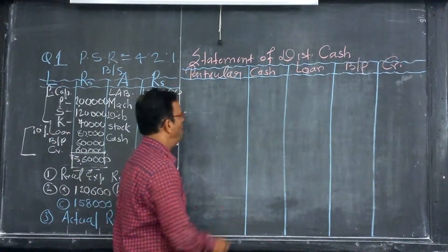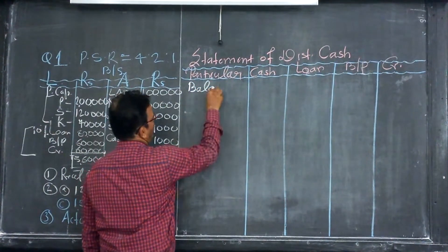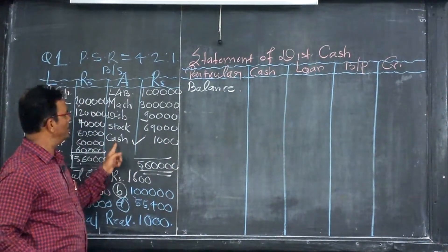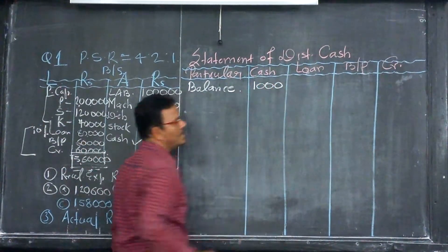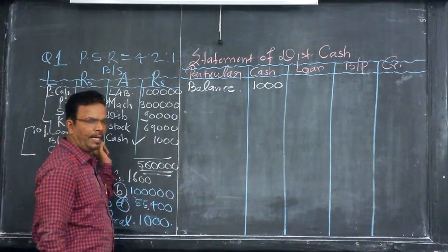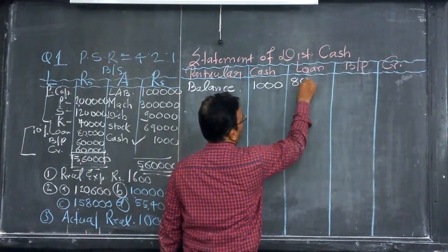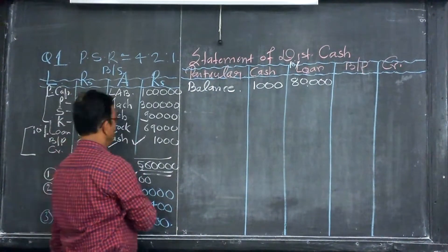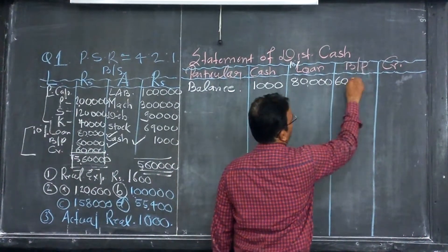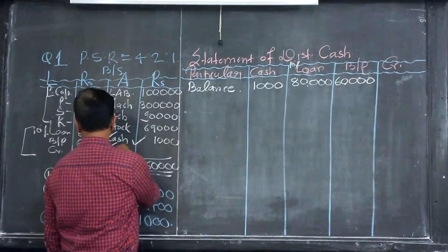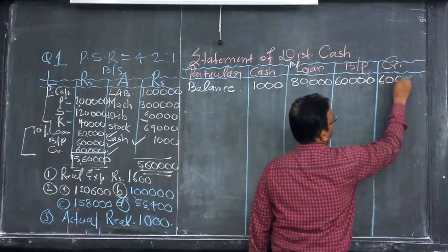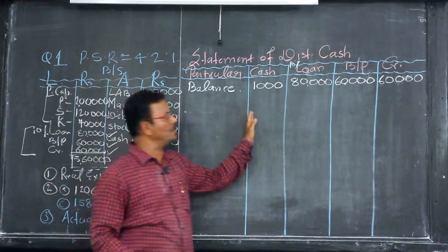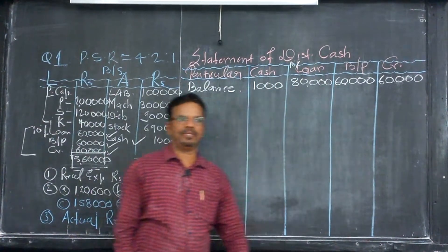First step: always write the balance. See the balance sheet. Cash given is 1,000, so we write cash 1,000. 10% loan given is 80,000, so we write 80,000. Bills payable given is 60,000, so we write 60,000. Creditors given is 60,000, so we write 60,000. So balance: 1,000; 80,000; 60,000; and 60,000.